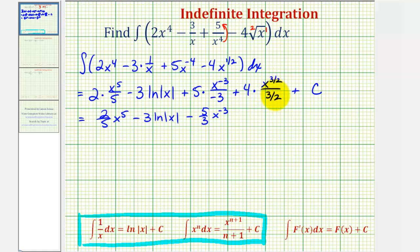And here, instead of dividing by three-halves, we'll multiply by two-thirds, so plus four over one times two-thirds x to the three-halves plus C.